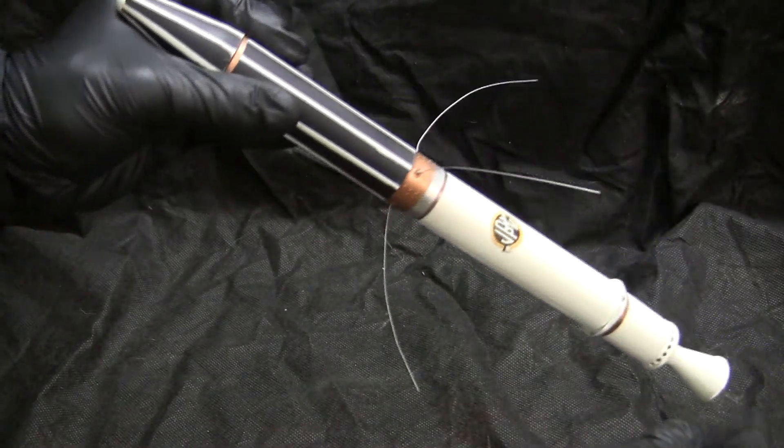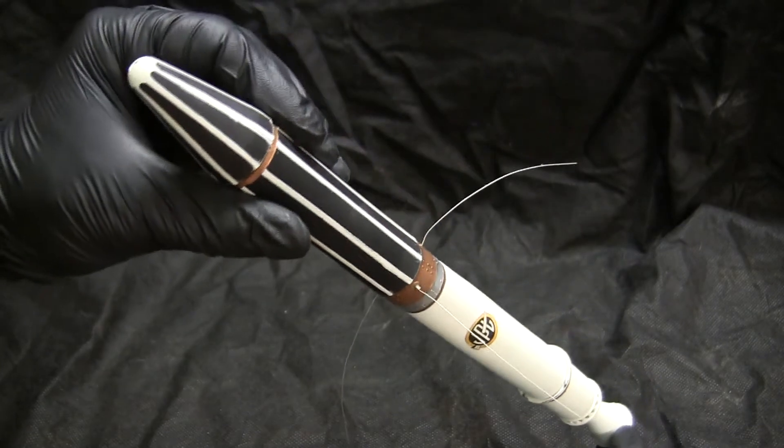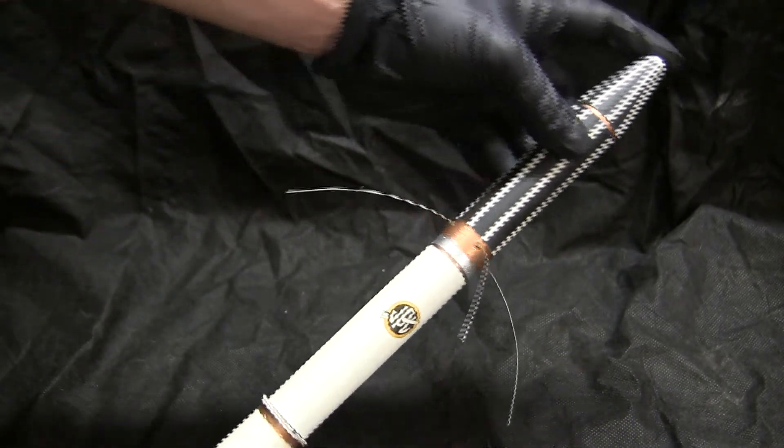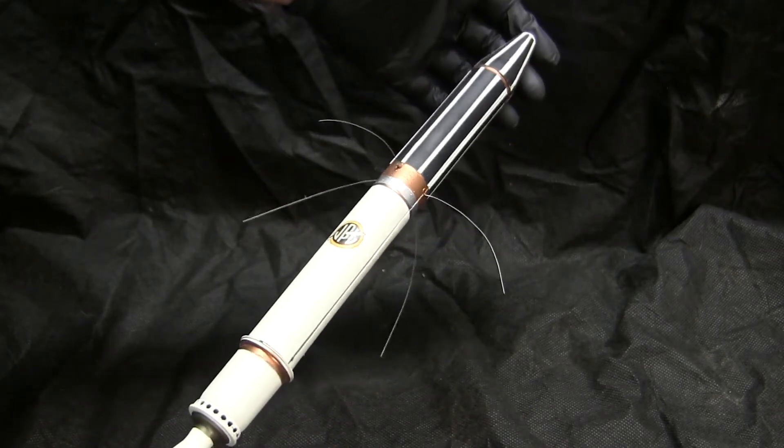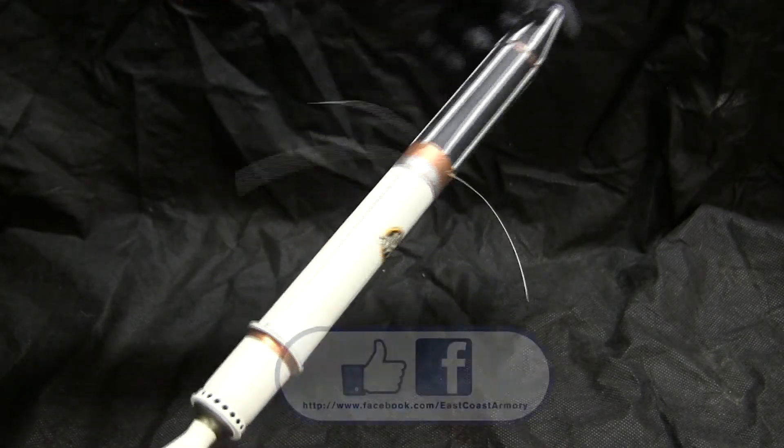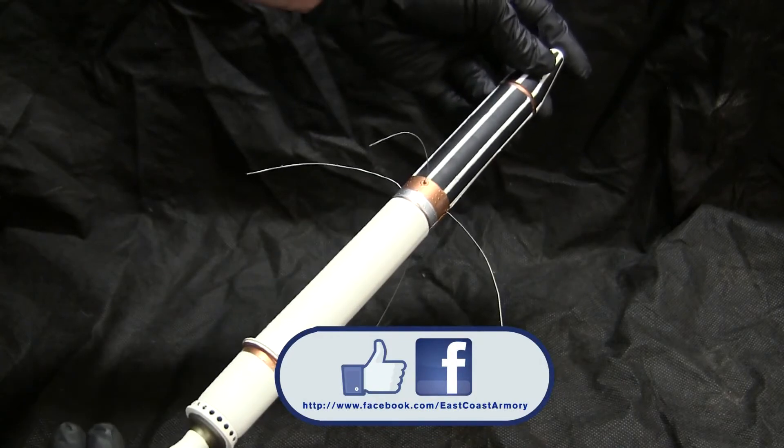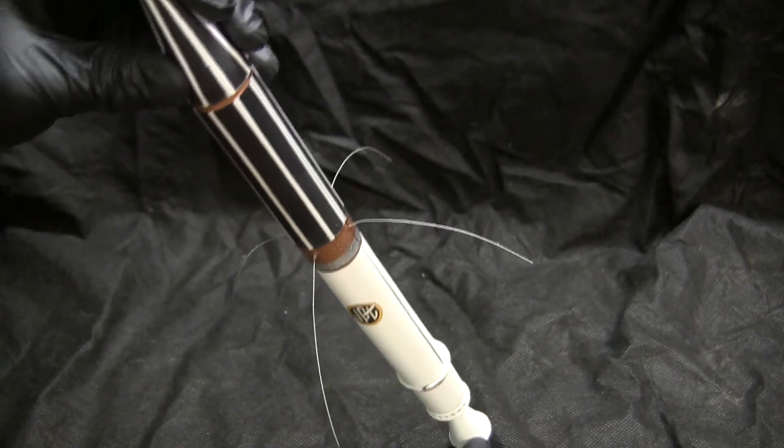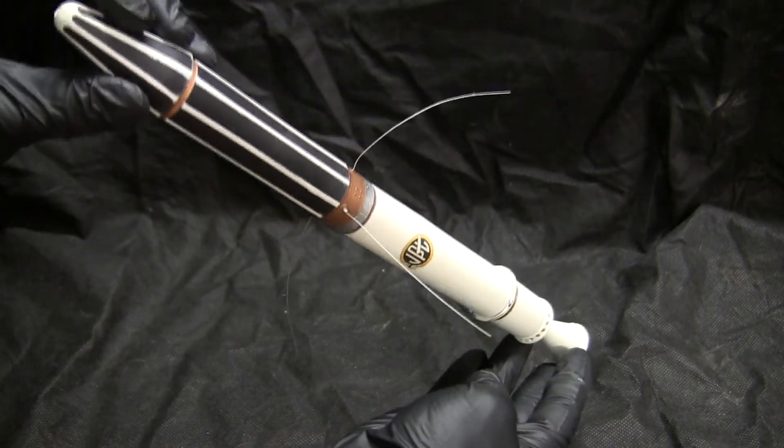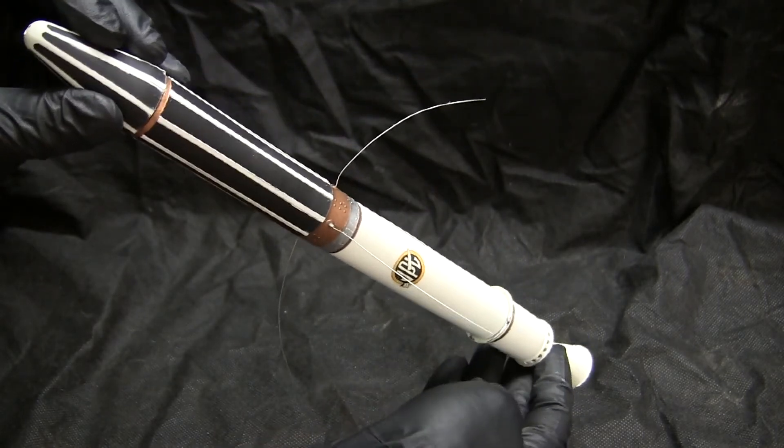And that concludes this model showcase video for the Explorer 1 satellite. Stay tuned for more 1:6 scale modeling videos and stop by and like us on Facebook. Also, don't forget to check out EastCoastArmory.com for more 1:6 scale tank builds as well as 1:6 scale detail components.